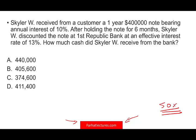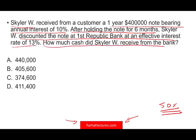Let's go ahead and take a look at this first question. Skyler W. received from a customer a one-year, $400,000 note bearing an annual interest rate of 10%. So Skyler either lent money to a customer or made a sale, and now they receive the note. It's a one-year note. After holding the note for six months, Skyler discounted the note at First Republic Bank at an effective interest rate of 13%. The question is: how much cash did Skyler receive from the bank?